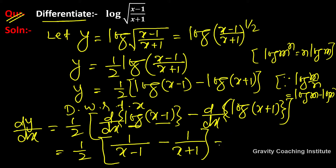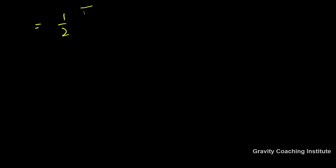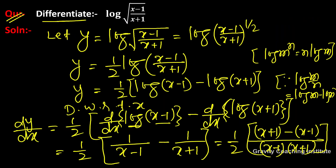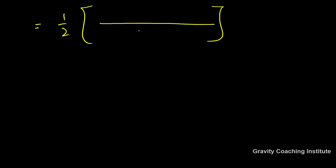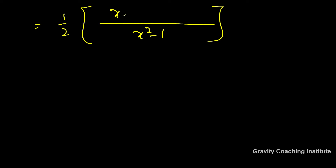LCM लेंगे तो यह होगा 1/2 into (x-1)(x+1), और यह होगा (x+1) minus (x-1). Denominator में identity (a+b)(a-b) = a²-b² वाला use करेंगे, तो यह होगा x²-1। और numerator में x+1 minus (x-1)।